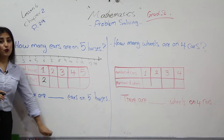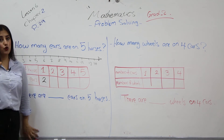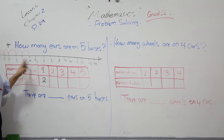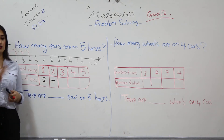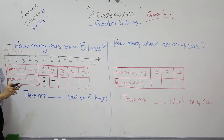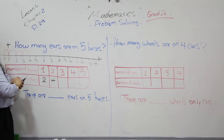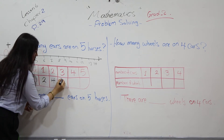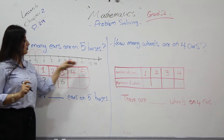If you add one more horse, it becomes two horses. We jump two more times — it ends on four. Two horses have four ears. If you add one more, three horses — we jump twice again — it becomes six. Six ears.